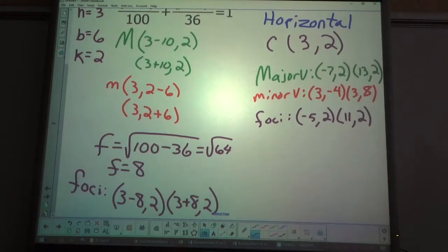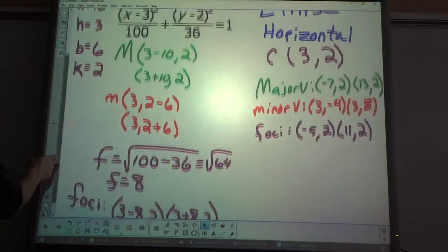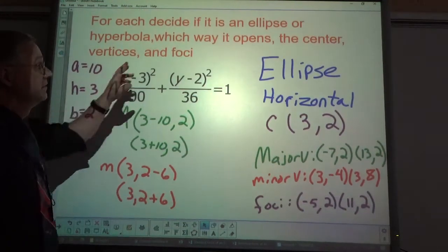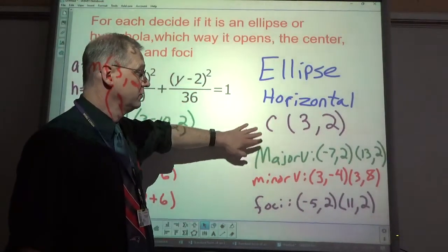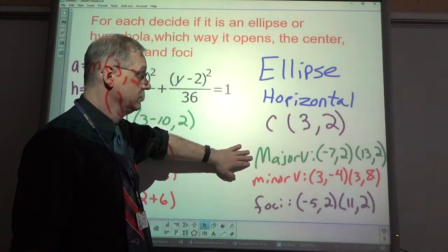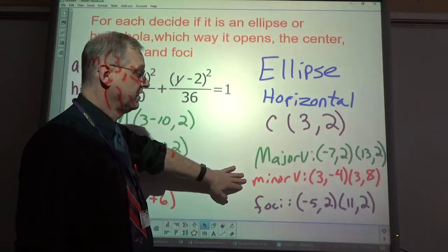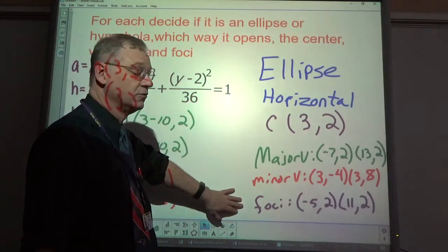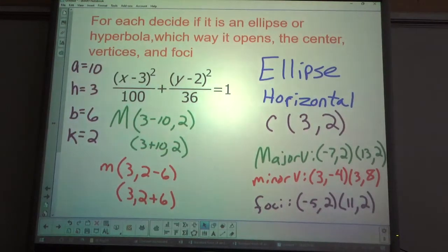So to summarize: this is a horizontal ellipse, center at (3, 2), major vertices at (-7, 2) and (13, 2), minor vertices at (3, -4) and (3, 8), and foci at (-5, 2) and (11, 2). Let's take a look at another example — give this a try before unpausing.